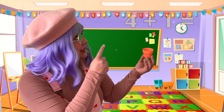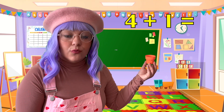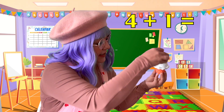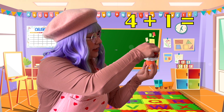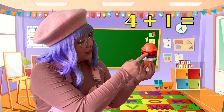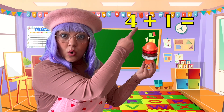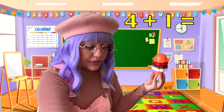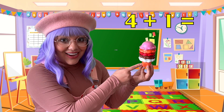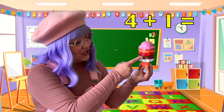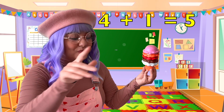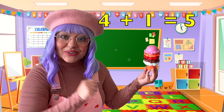Let's do number 2: 4 plus 1. Let's add 4 scoops — 1, 2, 3, 4. Now 4 plus 1 — let's add 1 more scoop. So what's 4 plus 1? Let's count: 1, 2, 3, 4, 5. 5 scoops. 4 plus 1 equals 5.